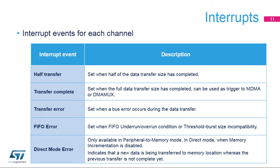Each DMA stream is designed with this group of interrupt events. The half-transfer interrupt flag is set when half the data has been transferred. The transfer-complete flag is set when the transfer is complete. The transfer-error flag is set when an error occurs during the data transfer. The FIFO error flag is set whenever a DMA FIFO underrun or overrun condition is detected, or due to threshold burst size incompatibility. The direct-mode error flag is set in peripheral-to-memory mode in direct mode when memory incrementation is disabled, indicating that new data is being transferred to a memory location whereas the previous transfer is not yet complete.